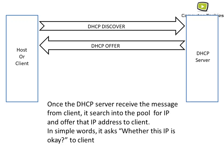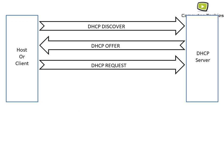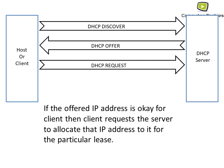After the DHCP Offer, the next step is the DHCP Request. In response to the DHCP server's question about whether the IP address is acceptable, the host replies, 'Yes, this IP address is okay for me — will you please allocate it to me?' The host sends a DHCP Request to the server, asking it to allocate that IP address for a particular lease period.